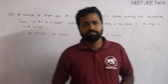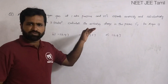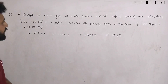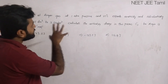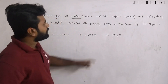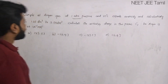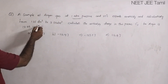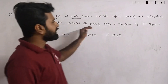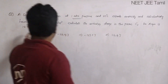Hello everyone. In our PyQ series, the second question is from thermodynamics. A sample of argon gas at 1 atmospheric pressure and 27 degrees C expands reversibly and adiabatically from 1.25 decimetre cube to 2.50 decimetre cube. Calculate the enthalpy change in this process. Cv for argon gas is given.